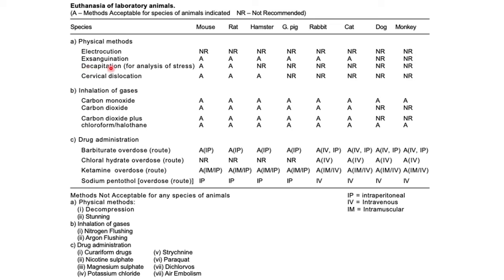Decapitation can be carried out only on mouse and rat. Cervical dislocation — the last physical method — can be performed only on mouse, rat and hamster, while it is not recommended for guinea pig, rabbit, cat, dog or monkey.